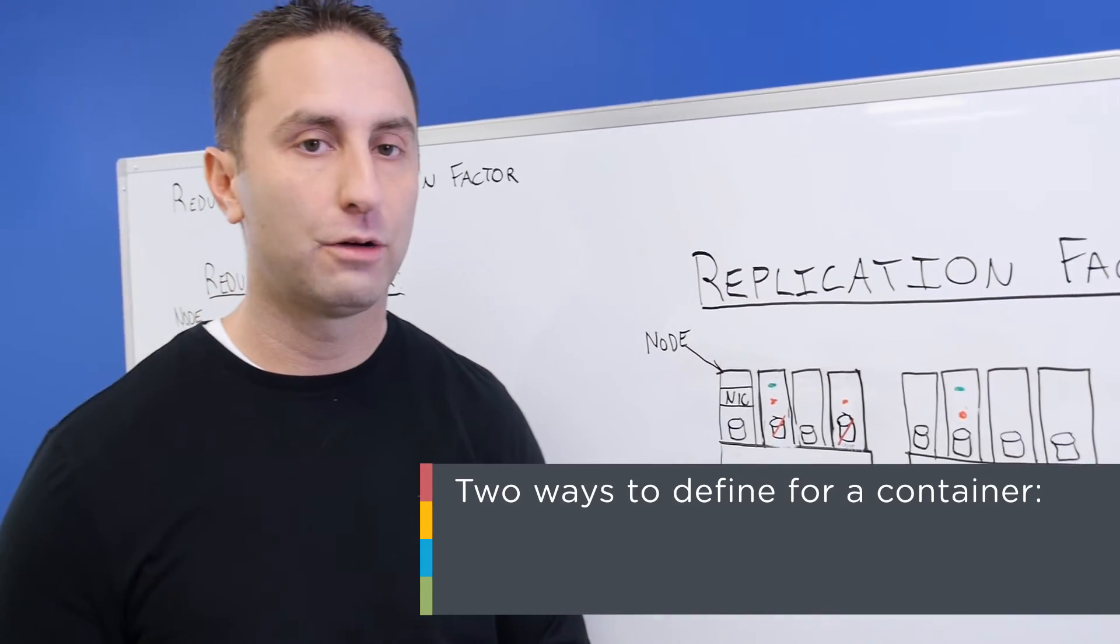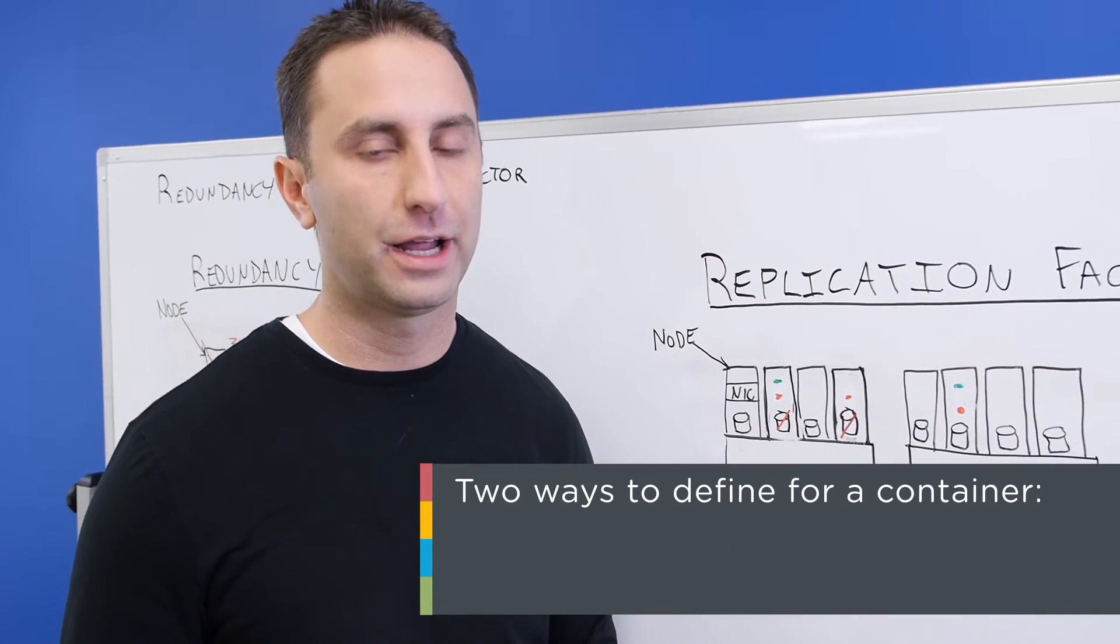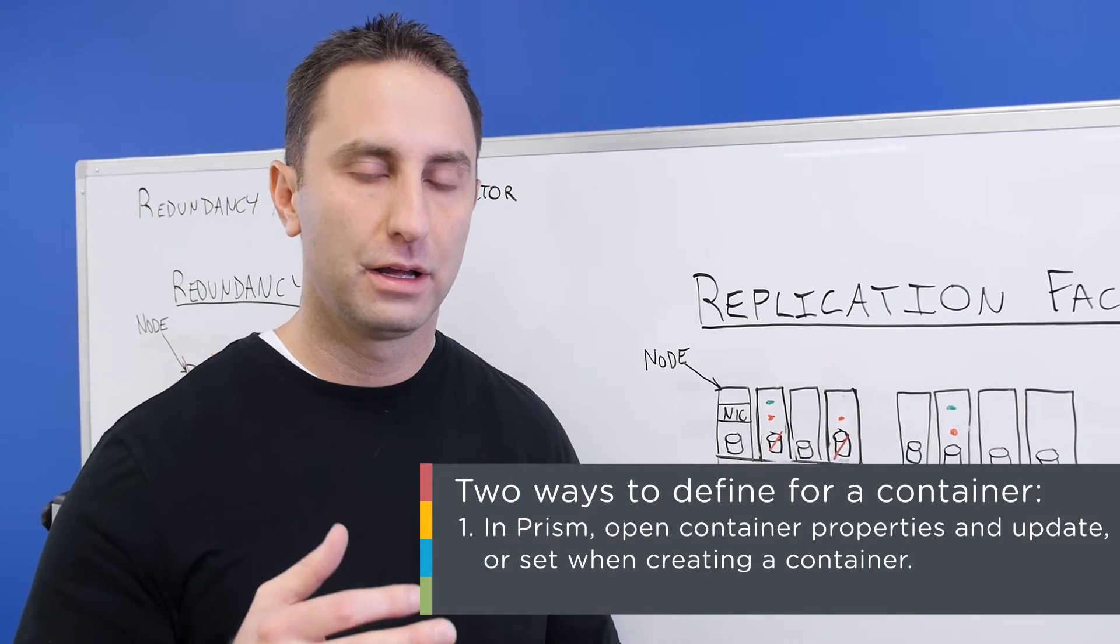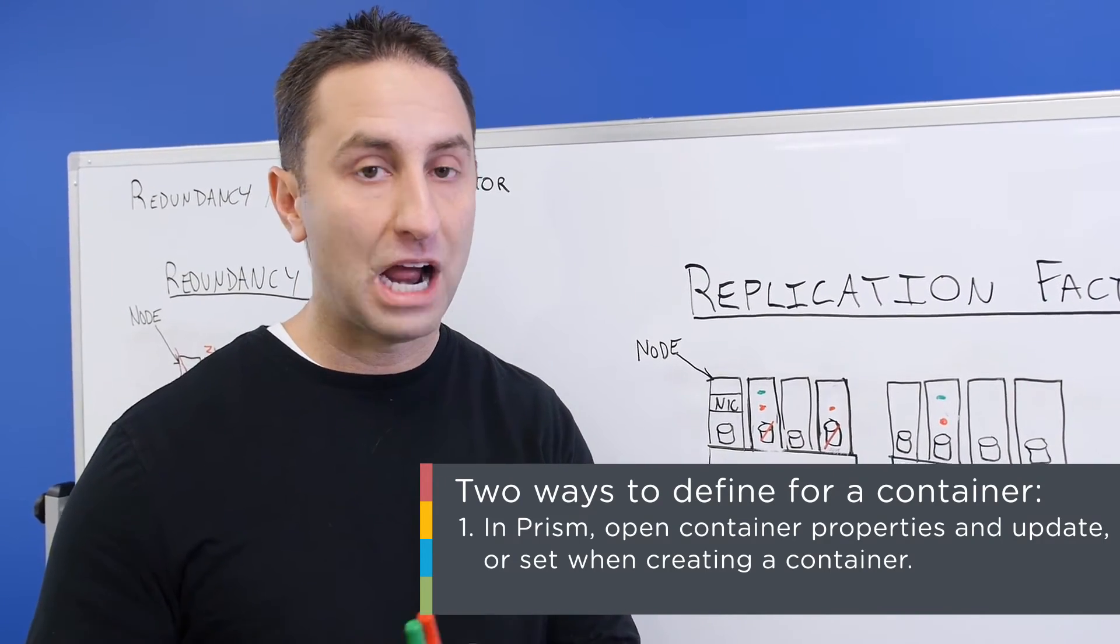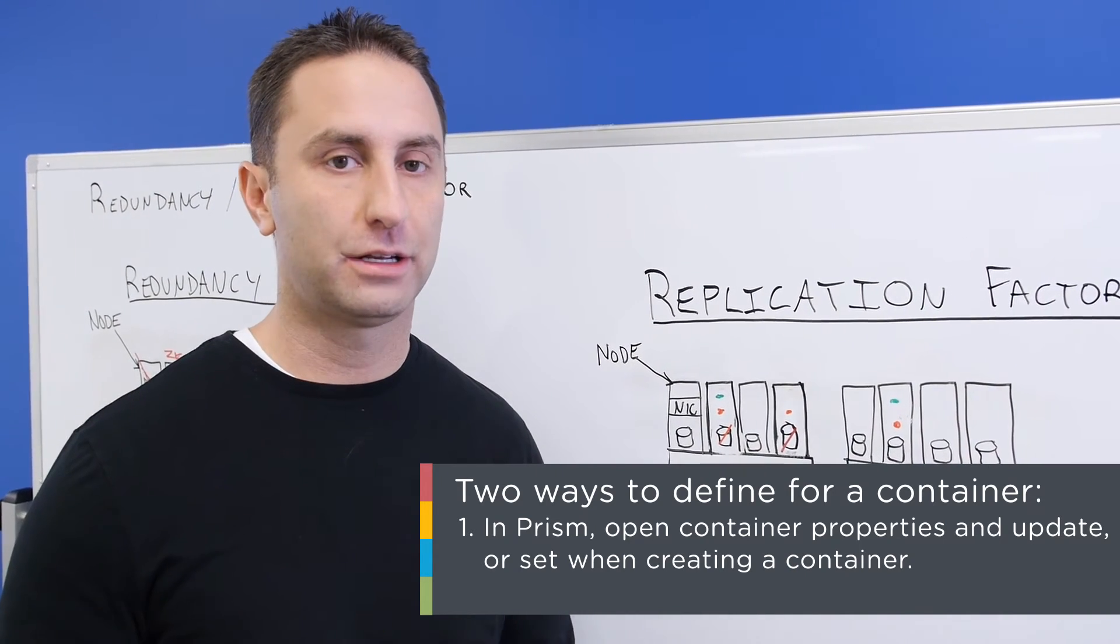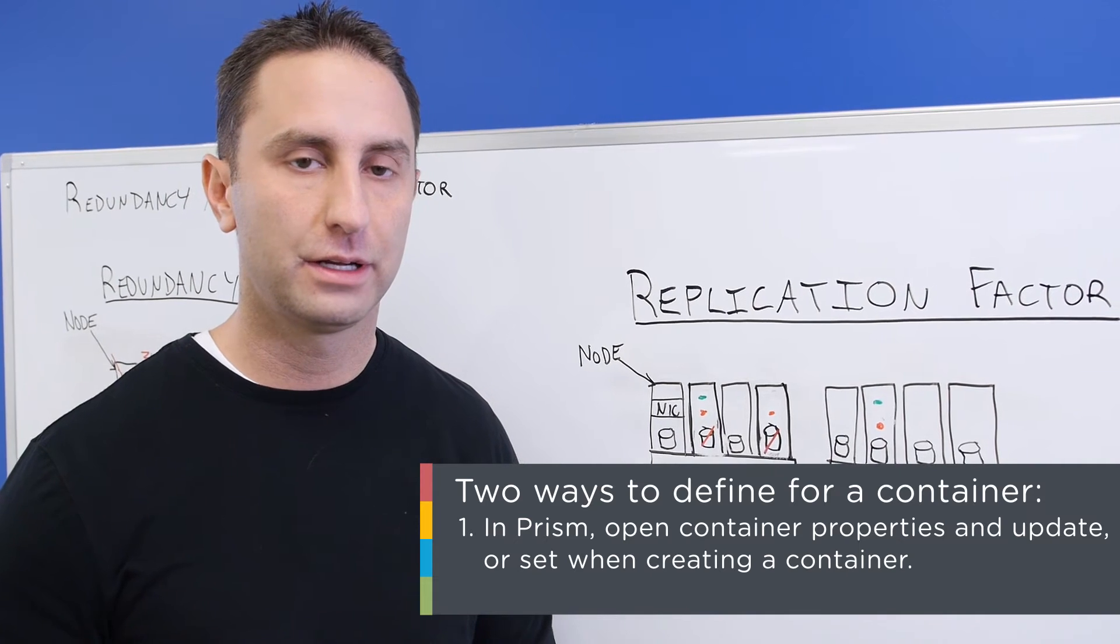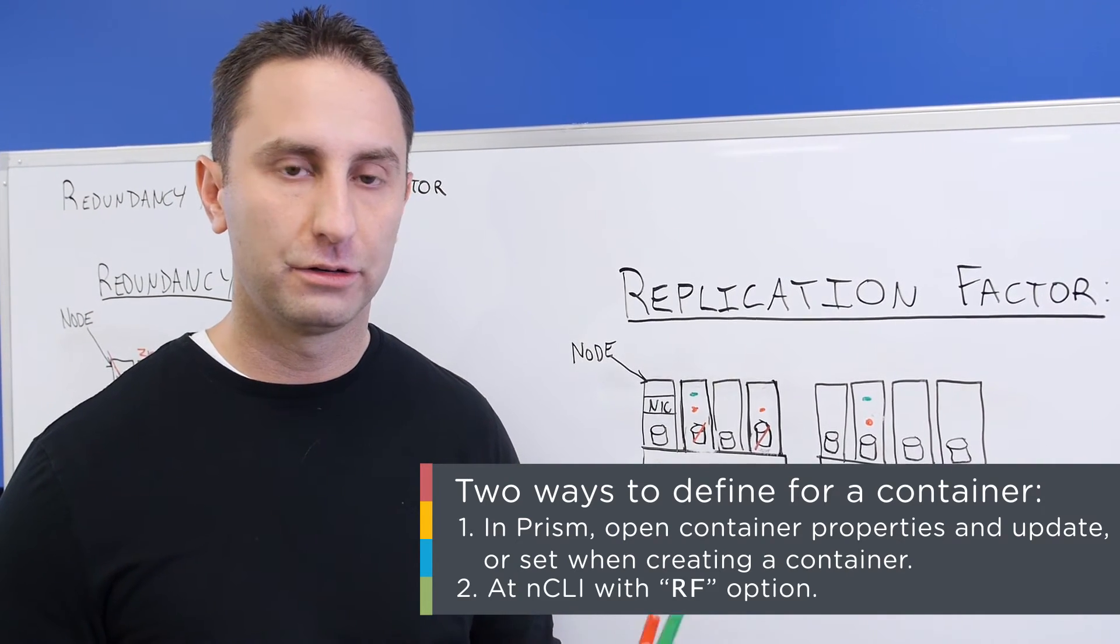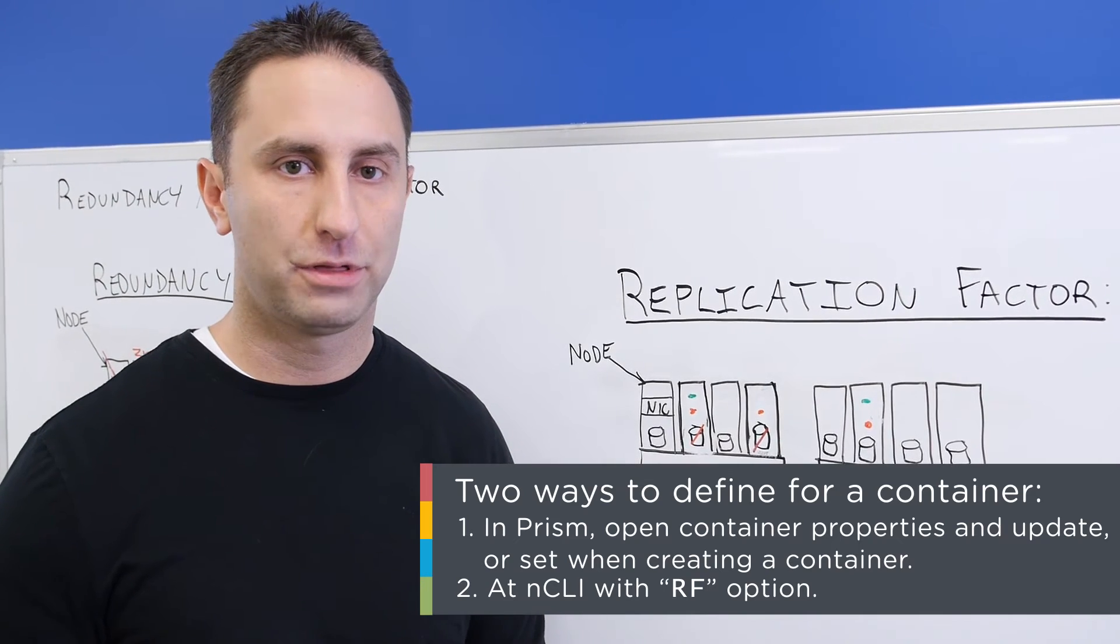So how do you define what the replication factor is for a container? Well, there's two ways to do that. The first way is in Prism. You can either open your container properties and update it in Prism to three, or when you first create a container you can set it to whatever you want your replication factor to be, either two or three. The other way to do it is from the Nutanix command line interface with the rf option when you're creating your container.